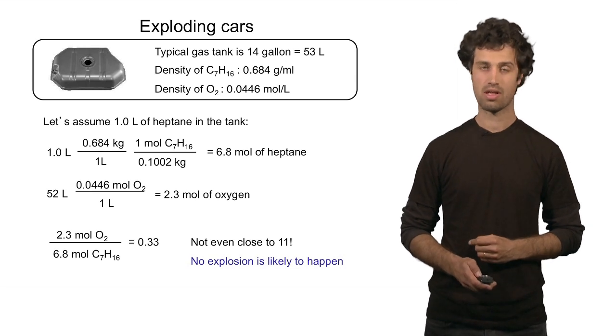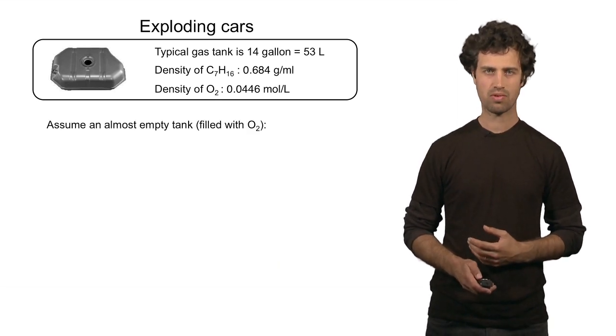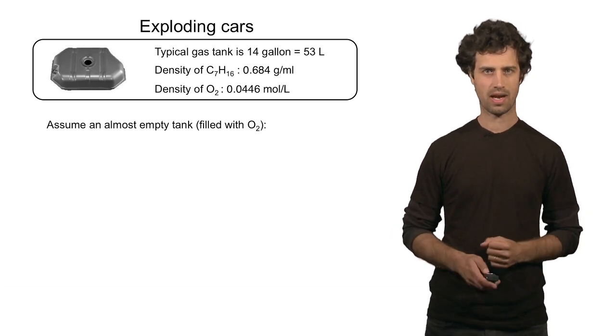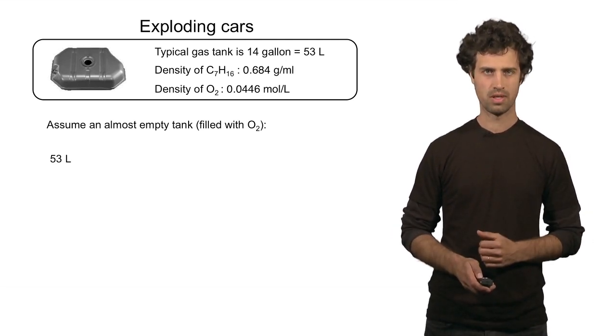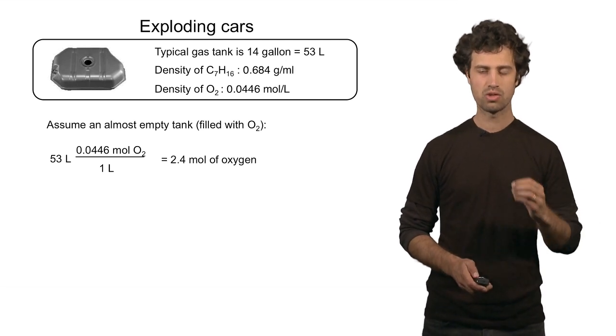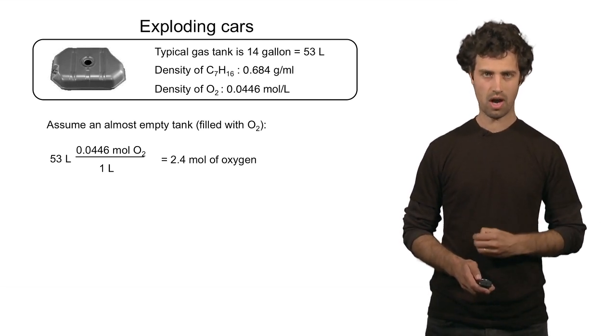Let's look at case number 3. In case number 3, we have a tank that is almost completely empty. There's no heptane in there, only oxygen. So let's say I have 53 liters of oxygen. How many moles of oxygen is that? We multiply by the density and find 2.4 moles of oxygen.